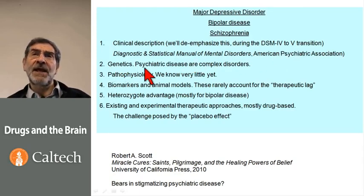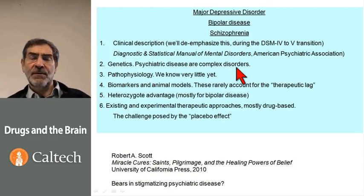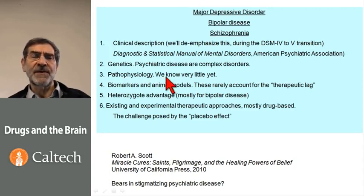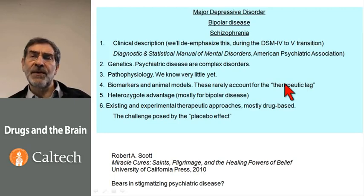We will treat the genetics of psychiatric disease. When we get to schizophrenia, I will remind you that these are complex disorders — they are polygenic, multifactorial, and partially penetrant — and we'll explain what those mean. We'll discuss the pathophysiology, which is a very important topic for psychiatric diseases, but also our frustrations that we know so little about it. We'll discuss biomarkers for psychiatric diseases and animal models, and I'll remind you that these animal models rarely reproduce the so-called therapeutic lag — the two- to three-week period it takes a psychiatric drug to achieve its full effect.